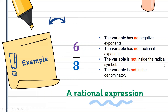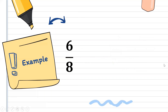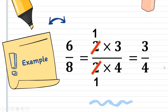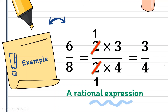6 all over 8 can be reduced to lowest terms. The factors of 6 are 2 times 3, and the factors of 8 are 2 times 4. We cancel the common factor, which is 2. So 1 times 3 is 3 and 1 times 4 is 4. Therefore, the lowest term of 6 all over 8 is 3 fourths, and this is still a rational expression.